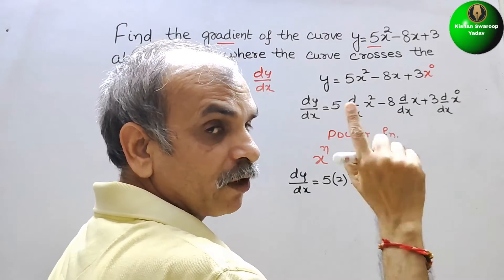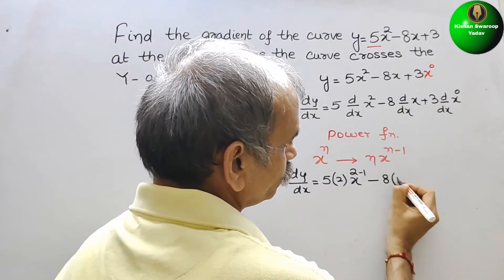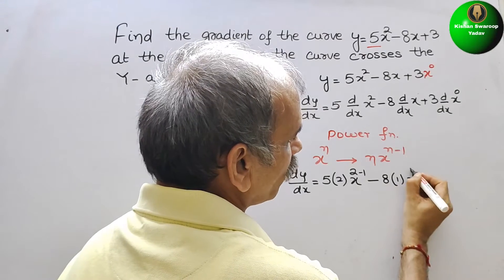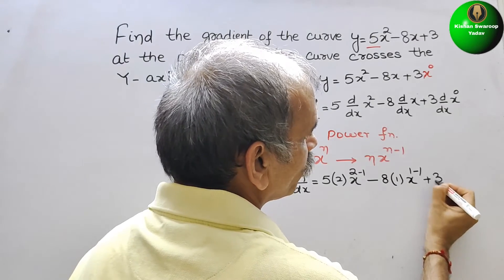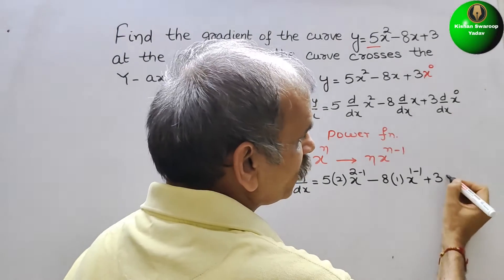And minus 8, here n is 1, x means 1 is the power, and x to the power of 1 minus 1, plus 3 and the n is 0.